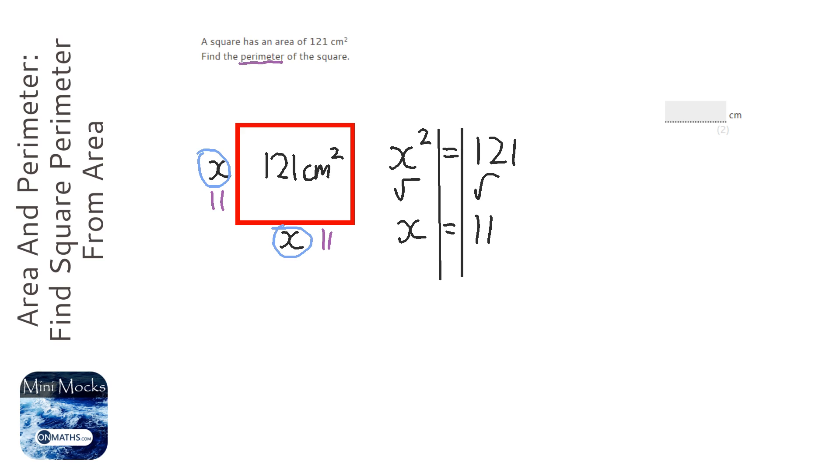So I know perimeter is the distance around the square and each side is 11. So it's 11 plus 11 plus 11 plus 11 or 11 times 4, which is the perimeter, which is 44. So the answer is 44 cm.